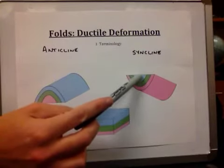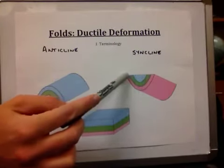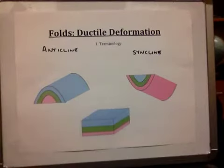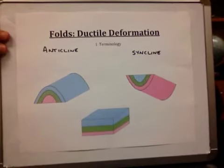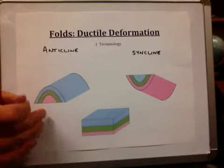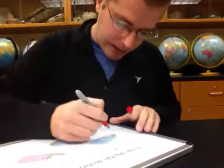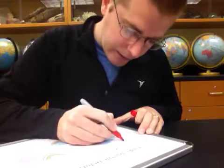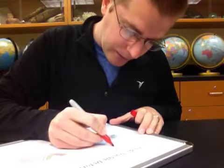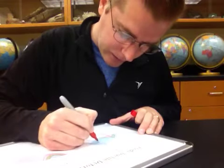In a syncline, the youngest rocks are in the center and it gets older, in terms of the rocks, as you move towards the sides. We're going to draw an imaginary plane that cuts the folds in half. This is known as the axial plane, which is essentially the plane of symmetry along which the folding is occurring.